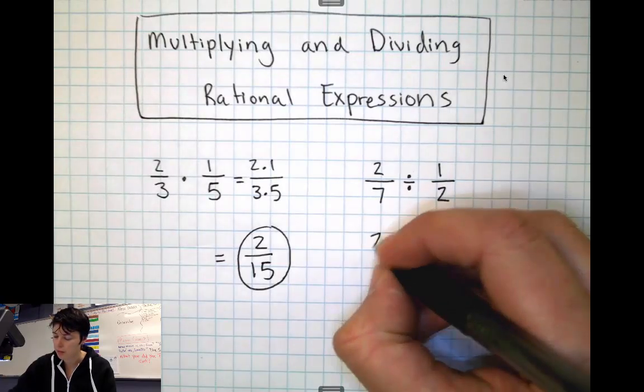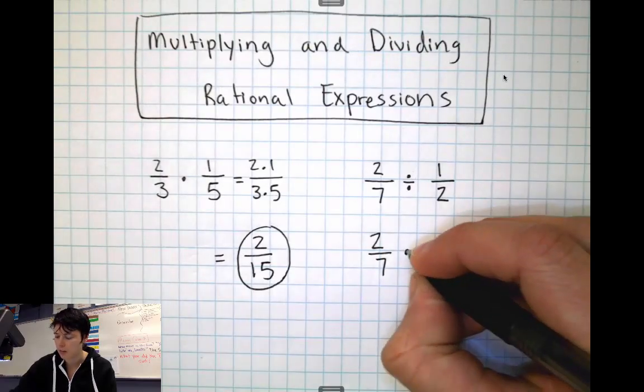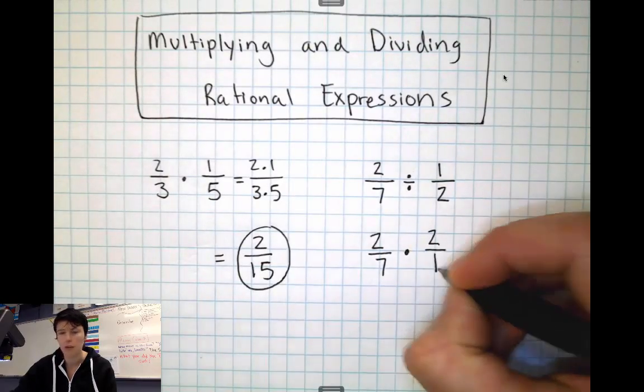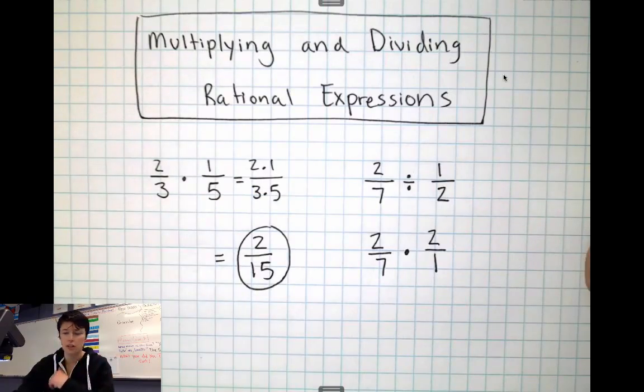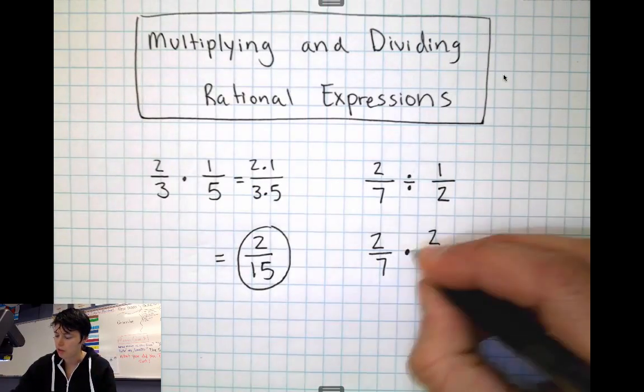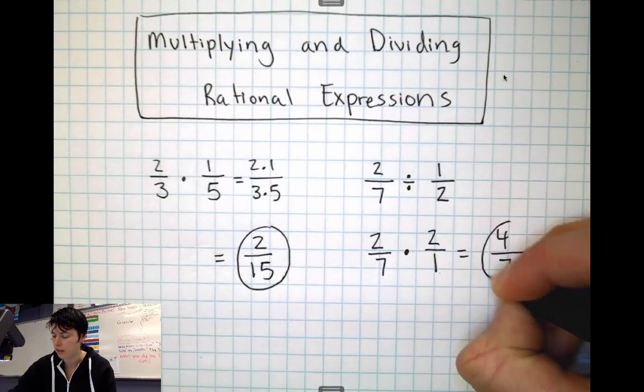So this problem, 2/7 divided by 1/2, we would change it to 2/7 times 2/1, and we would flip that fraction. Then we would do what we did over here, we would just multiply straight across. 2 times 2 is 4, 7 times 1 is 7, and we have 4/7 as our answer.